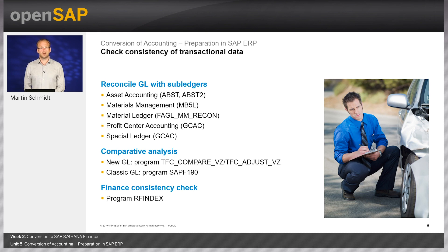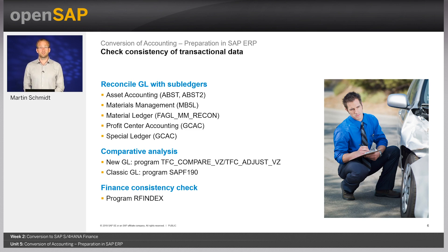The output of ABCT2 is a list of GL accounts per company code with differences in amounts between asset accounting and the general ledger. Then, individually for each affected GL account, you run transaction ABCT. First, asset line items for each fixed asset are compared with asset summary records. Second, asset line items are summarized per document number and compared with general ledger account line items posted to that fixed asset. Standard asset reports such as asset history sheet or asset balances are also helpful when evaluating data consistency.